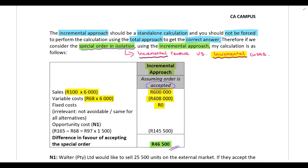If fixed costs increased as a direct result of the order — say by R200,000 — then you would take that incremental fixed cost into account, but only the additional portion, not the total fixed cost. In this question we are not told that fixed costs change, so there is no incremental portion and it is left out completely.